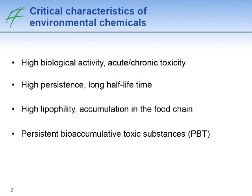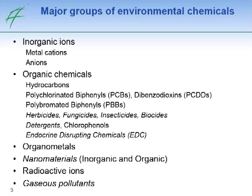Luckily, not all substances have these characteristics. Out of the wide variety of substances we look at, there are, for example, inorganic ions, organic chemicals — a very large group — organometals, nanomaterials, radioactive ions, and gaseous pollutants. In this talk today, I will focus only on a specific group: pesticides, particularly insecticides, as an example.